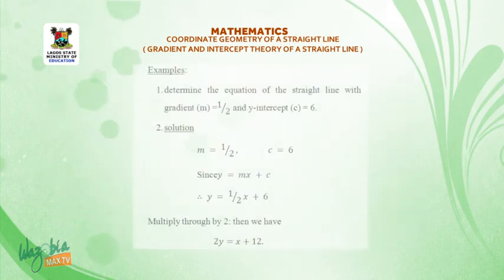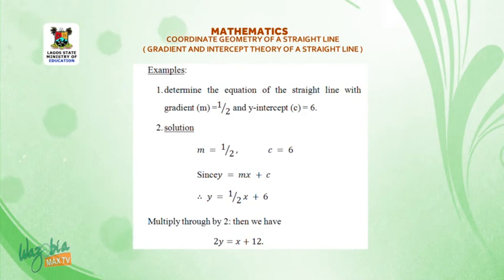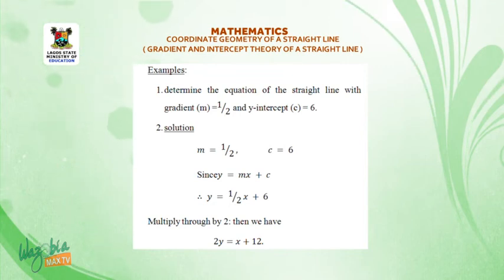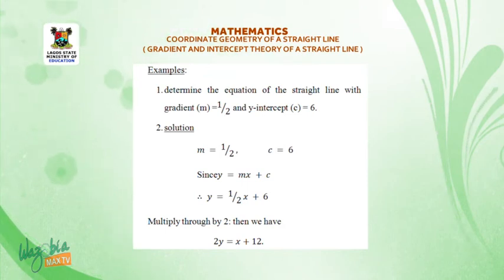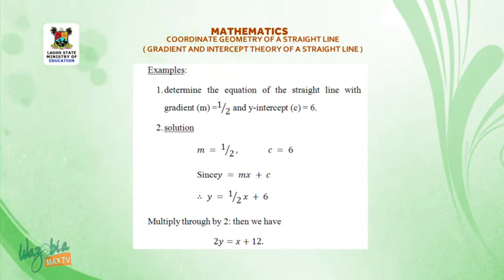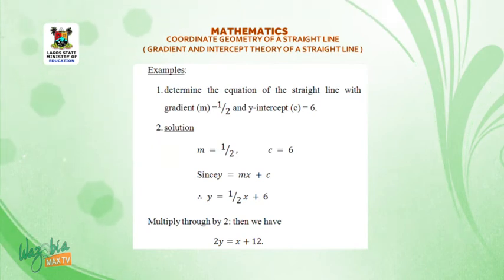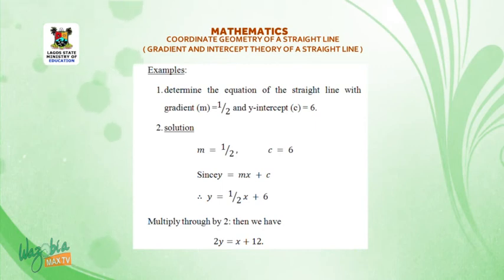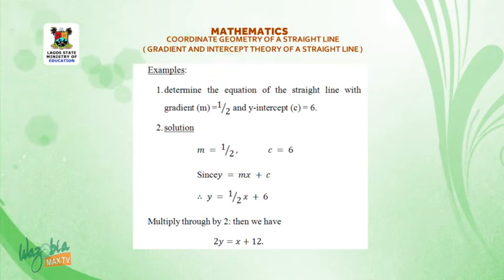Let's look at some examples. Number one: determine the equation of the straight line with gradient m = 1/2 and y-intercept c = 6. Solution: since y = mx + c, therefore y = (1/2)x + 6. Multiplying through by 2, we have 2y = x + 12.